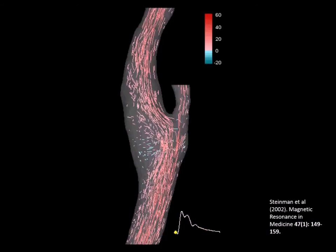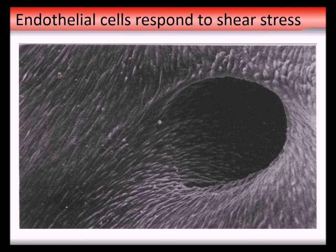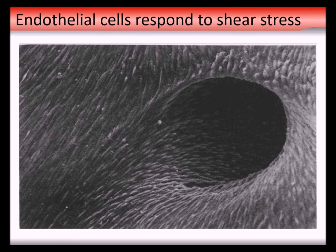Why do you get atherosclerosis at those points? That points the finger directly at the endothelial cells. Here's a scanning electron micrograph of the inside of an artery - you can see the endothelial cells all line up with the direction of flow, and at a branch point they curve off and go around the corner. This is because endothelial cells are mechanosensitive: they sense the stretch with every pulse and turn that into a biochemical signal, and they also sense the shear stress - the frictional force of flowing blood over the top of them - and that dramatically affects the way they behave.